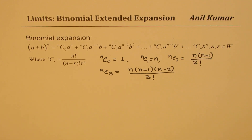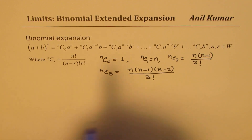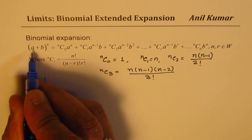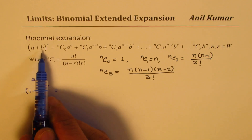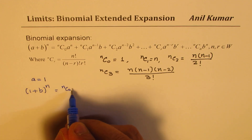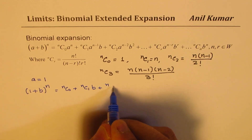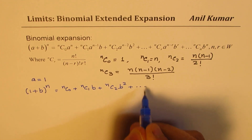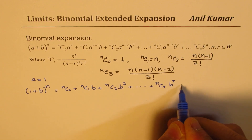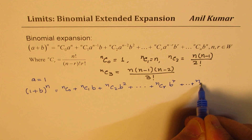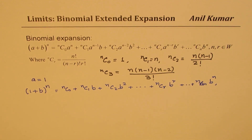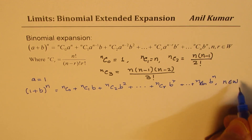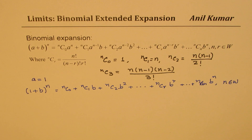That is just a refresh on the binomial expansion. Now let's take an important special case when a equals 1. In that case we get (1 + b)^n, which gives us n_C_0 plus n_C_1 * b plus n_C_2 * b^2 and so on, up to n_C_n * b^n. This is an extremely important series which we are going to use many times to find limits.